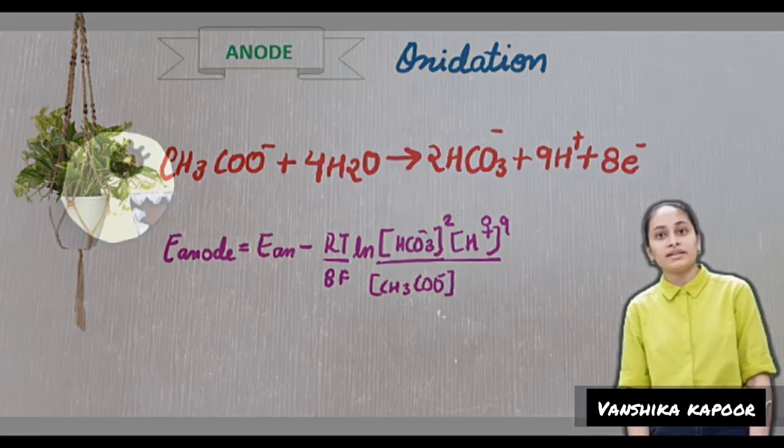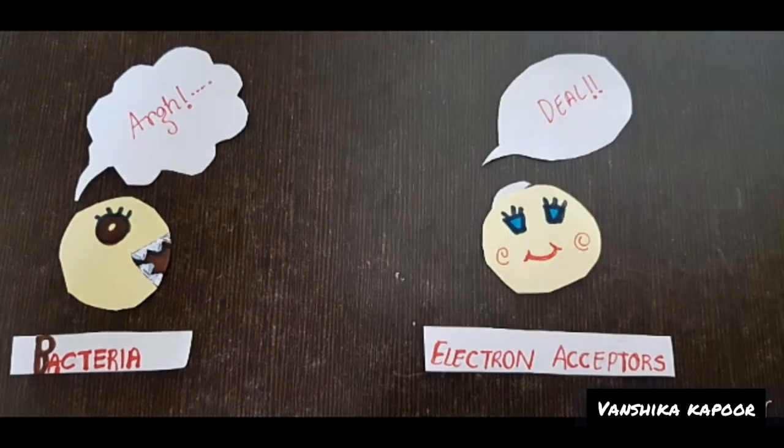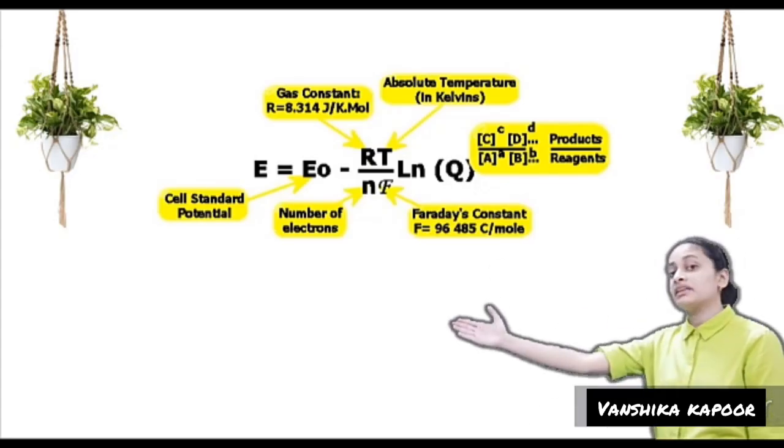But why are electrons released by the bacteria? This is because bacteria gain energy by donating electrons to electron acceptors like CO2, nitrate, and sulfate. The total voltage can be calculated by Nernst equation.